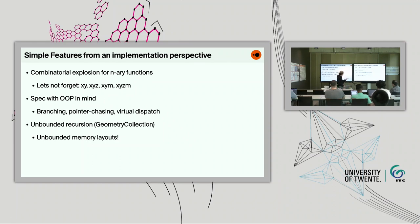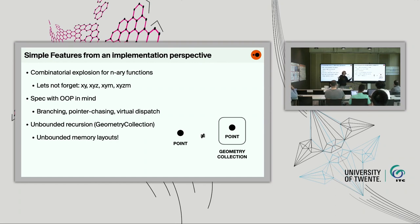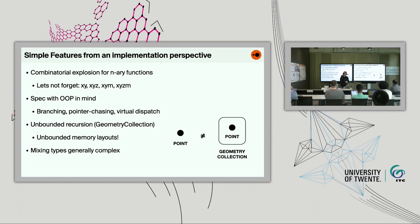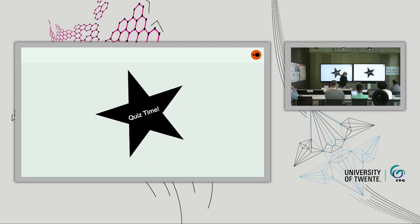My biggest beef is the unbounded recursion with geometry collections — any function you implement also has to have a recursive step to handle recursive geometry collections, which makes it difficult in C++ where it's hard to guard against stack overflows. Also, unbounded memory layouts: a point inside a geometry collection has to be treated differently from a standalone point, even though I can't imagine any place where you'd actually want them treated differently. Let's do a quick quiz to see how well you know these edge cases.